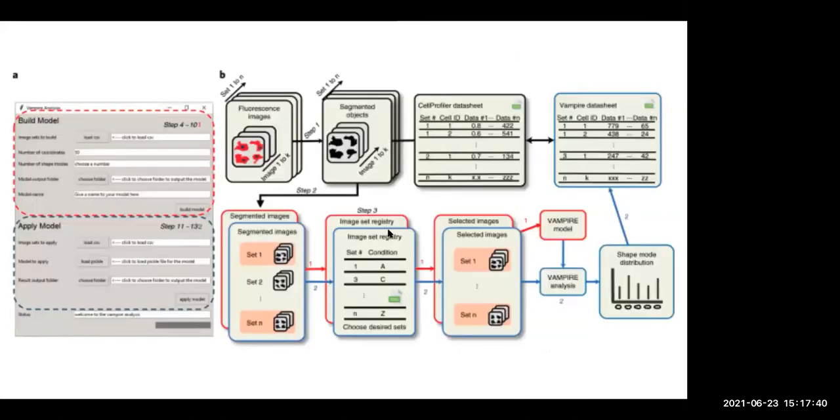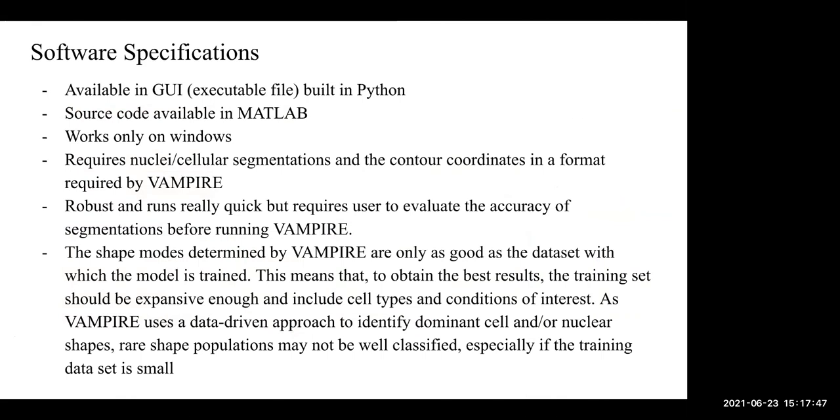So this is the overall workflow of the vampire software. It's available as a GUI that's built in Python. It works only on Windows. The source code is also available in MATLAB, but I couldn't find it on GitHub. And you need segmentations for the cells and the coordinates of those contours of those segmentations. And these need to be analyzed by the user before running them on vampire. Just so that you see you're selecting a good data set, a good training data set for vampire. So that it extracts the shape modes that you feel those data should exhibit.